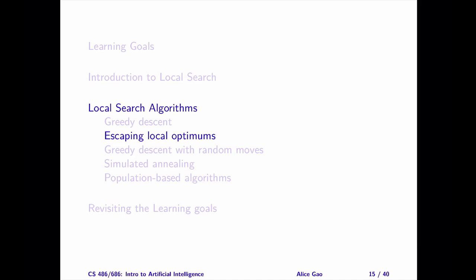Previously, I introduced greedy descent. One major problem with the greedy descent algorithm is that it may get stuck at the local optimal and fail to find the global optimal solution.